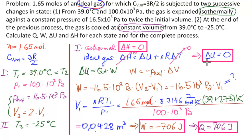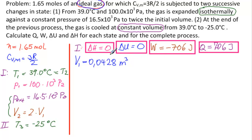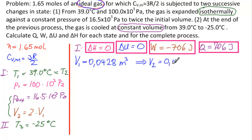On to the second process. Results from Process 1: ΔH = 0, ΔU = 0, W = −706 J, Q = +706 J, and V1 = 0.0428 m³. Process 2 has constant volume and a change in temperature. We need V2 first: V2 = 2·V1 = 0.0856 m³.